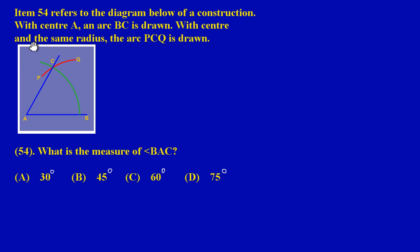With center B and the same radius, the arc PCQ is drawn. What is the measure of angle BAC? Let's just explain this information. Basically, what they're saying here is that with center A—and if you notice, this is my center A—and arc BC is drawn.